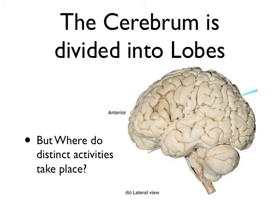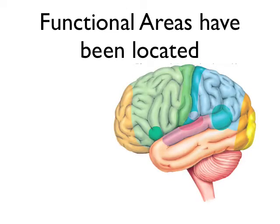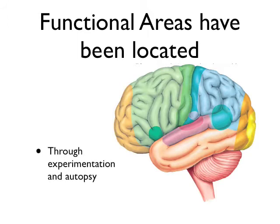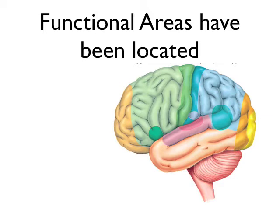We've done enough study to know that functional areas have been located within the cerebrum. How do we know where these things are? You can't tell by just looking at the cerebrum. How do we know where the sensory areas are, where the motor areas are?